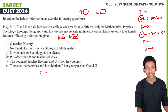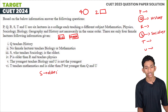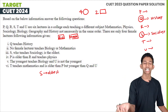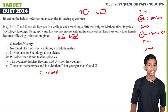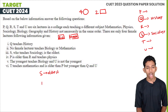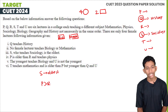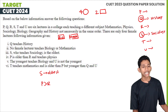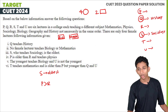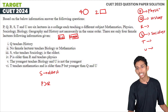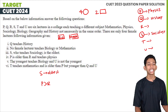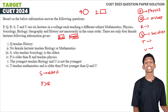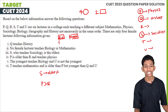S is the oldest. P is older than R and teaches Physics. The youngest teaches Biology. U is not the youngest, so U can teach Math or Geography. T teaches Mathematics and is older than P but younger than Q and U.